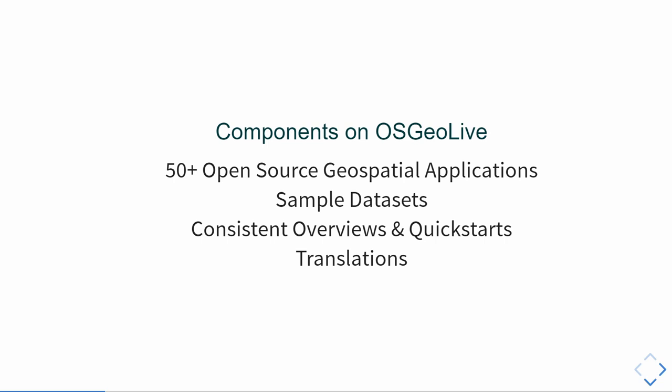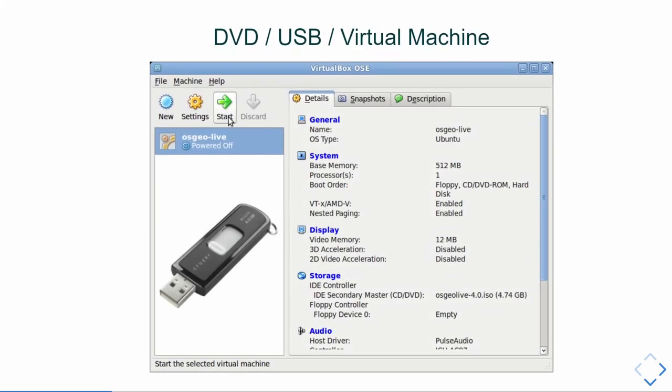For every project there is overview documentation explaining what the software does, and a quickstart to help you with the first steps. We have translations available in many languages including French, Spanish, Italian, German, Chinese, and Japanese. We encourage people to help with translations, because in some countries the documentation would be more accessible in the local language.